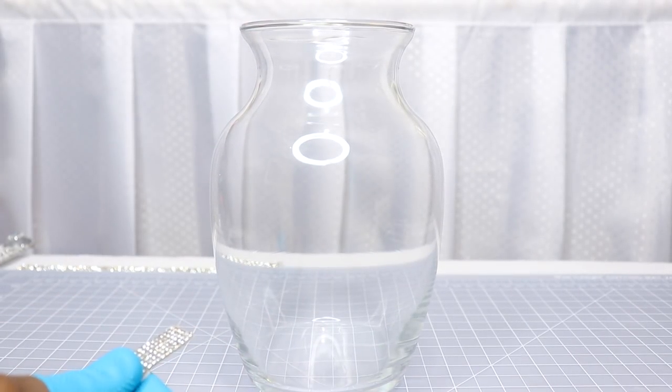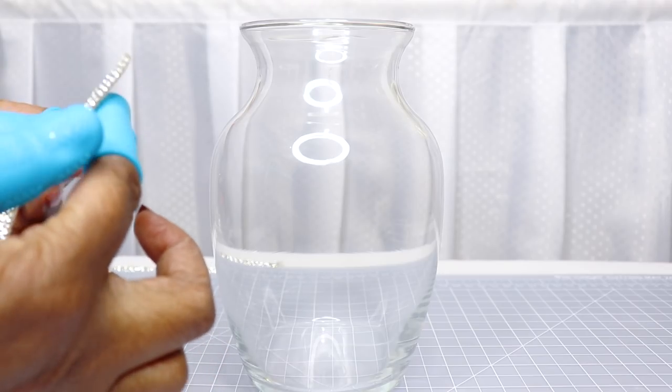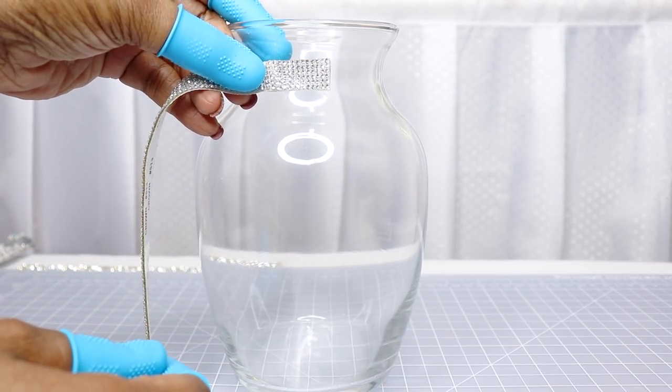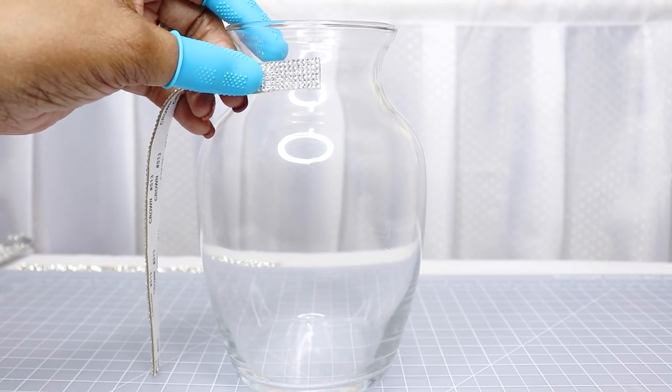Next I'm going to use this vase that I picked up from the Dollar Tree and create a similar look. I'm just going to wrap the diamond wrap around the neck of the vase.